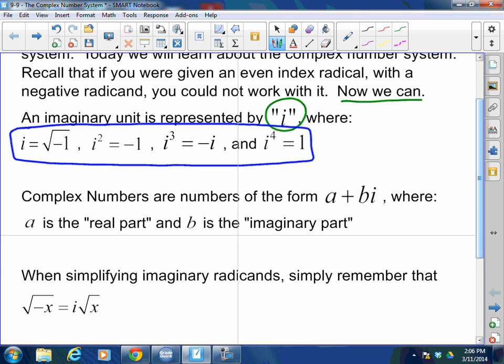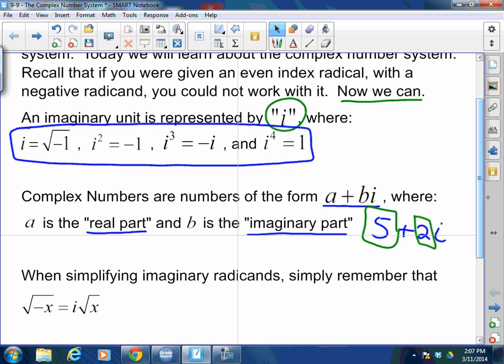A complex number, though, is a combination of an imaginary unit and a real unit. Complex numbers in the form of a plus bi, where a is known as the real part, and b is known as the imaginary part. For example, they'll give you something like 5 plus 2i. 5 is the real part. 2 is the imaginary part. Why isn't the i included? That's why it's the imaginary part, because it's next to the i. So that's what a complex number is.